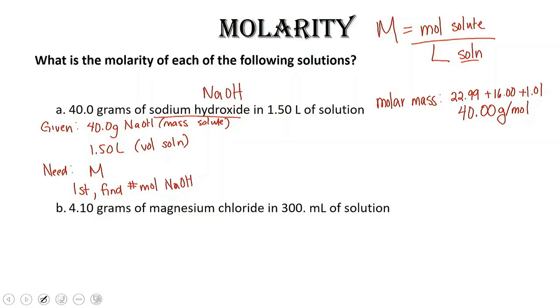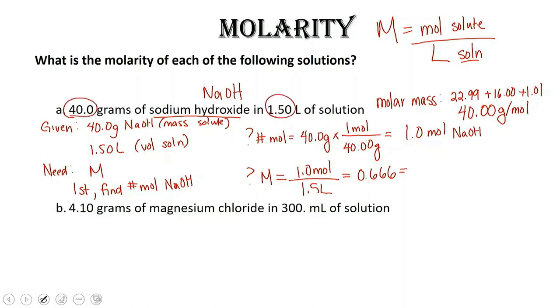The number of moles is going to be equal to 40.0 grams times our molar mass. If I have 40 grams and the molar mass is 40 grams per mole, then I have 1.0 moles of NaOH. So now, my molarity is going to be 1.0 moles divided by 1.5 liters, and we get 0.666. With 3 sig figs and 3 sig figs, our answer should also have 3 sig figs. So we've got 0.666 molar.